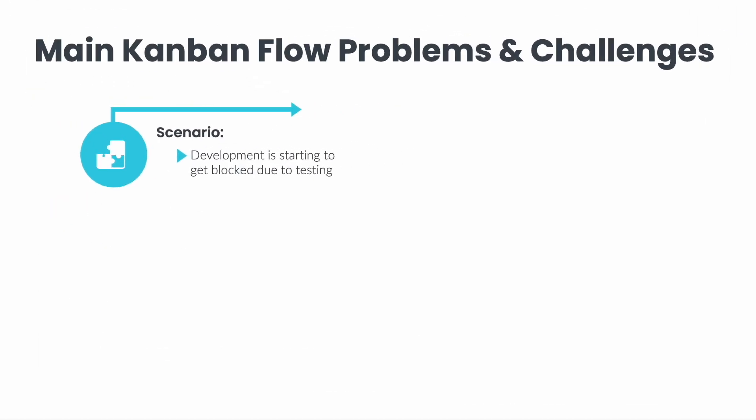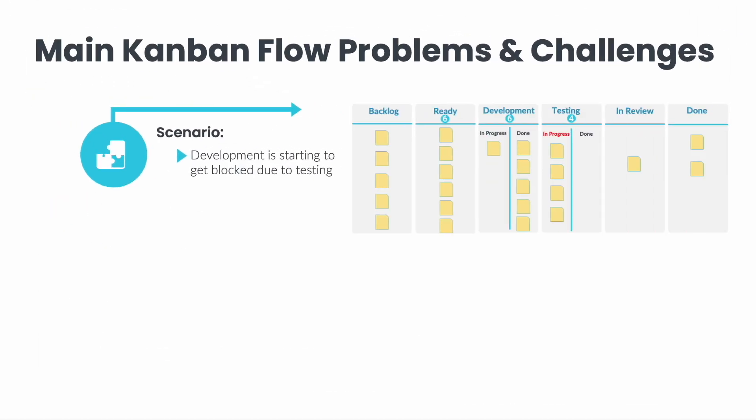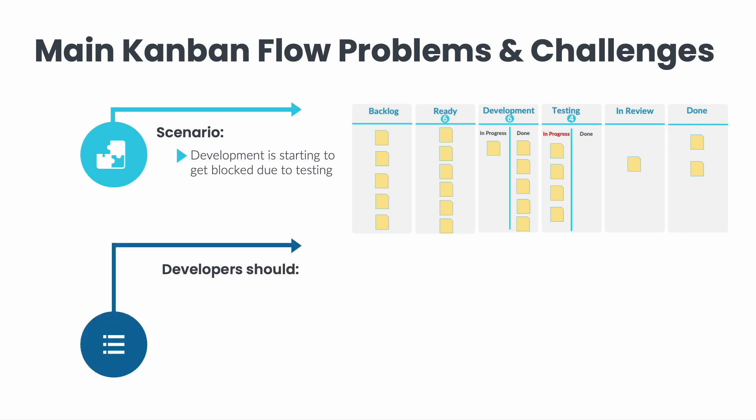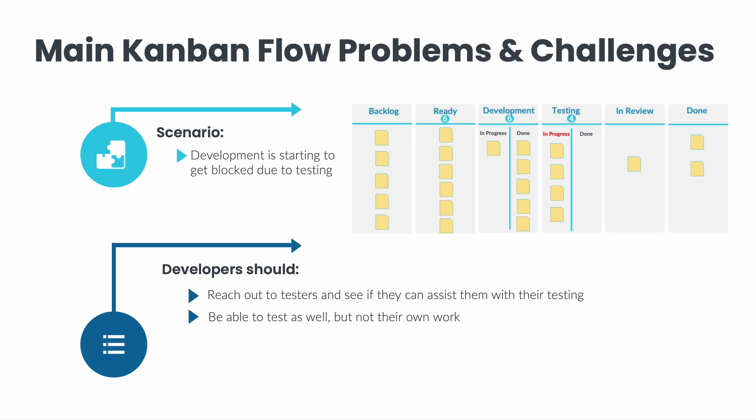Another challenge could be development starting to get blocked due to testing. In this scenario, development is at its WIP limit and testers still have items in progress. At this point, developers should reach out to testers and see if they can assist them with their testing, instead of picking up additional user stories from the ready column. All developers should be able to test as well, as long as they are not testing their own work.